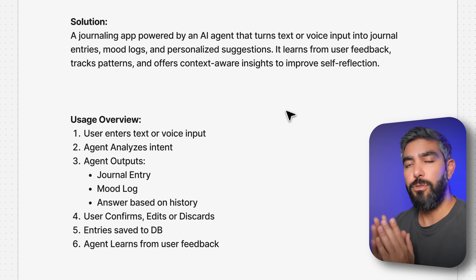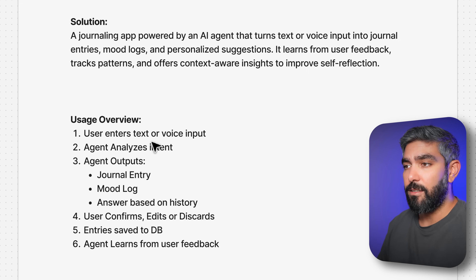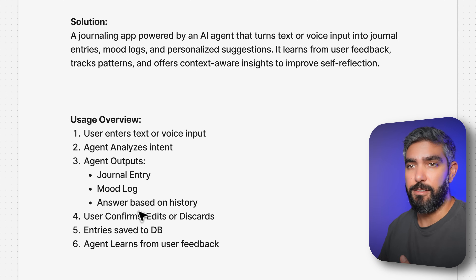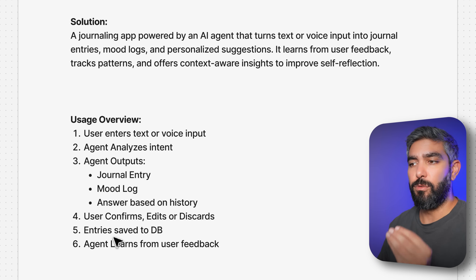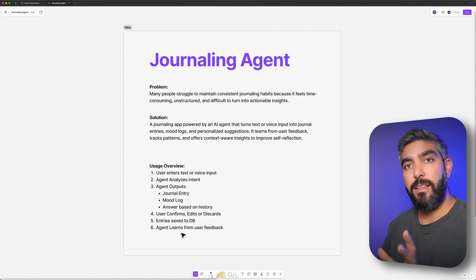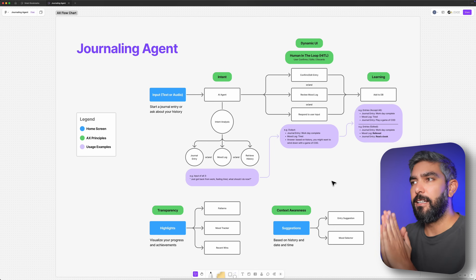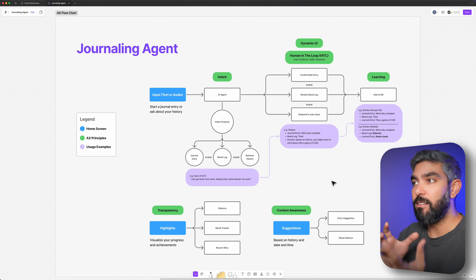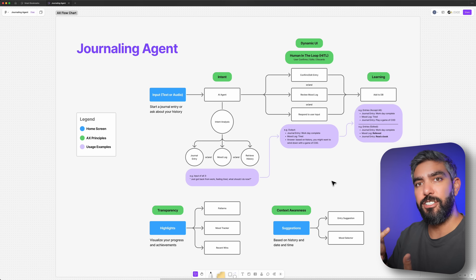After coming up with the solution, I wrote a small usage overview to guide the AX workflow. The intended usage: the user enters text or voice, the agent analyzes intent, and outputs a journal entry, mood log, or answers based on the user's history. The user will then confirm, edit, or discard those suggestions — and upon confirmation, everything is saved to the database. From that idea, I created an AX flowchart that illustrates how the agent behaves in conjunction with the user, including the agent's behavior alongside the user flow.